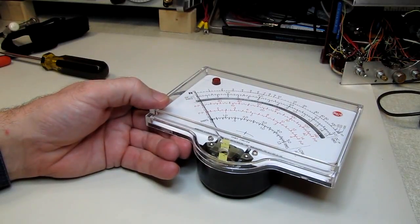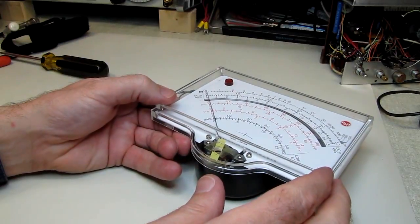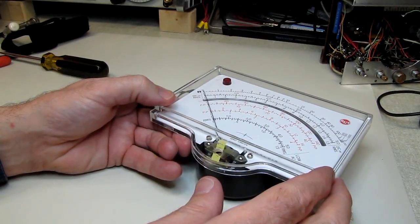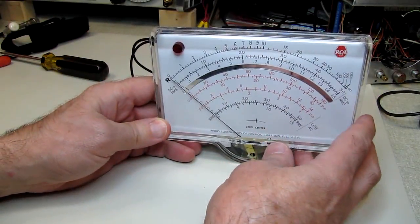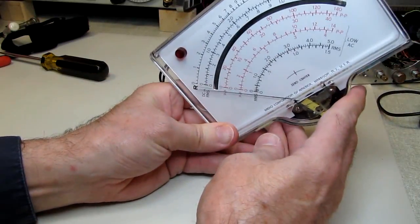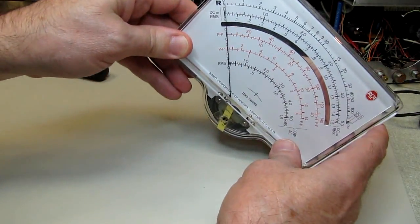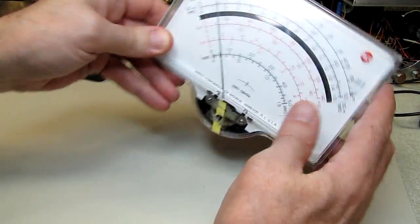Alright, I believe we're on the road to success here. Laying flat, we've got zero. Standing vertical, it's on the same position. Standing horizontal, and with the needle vertical, again, returns to zero.